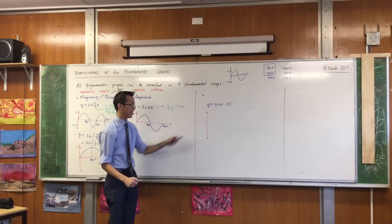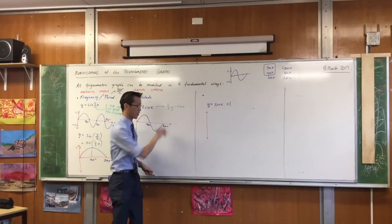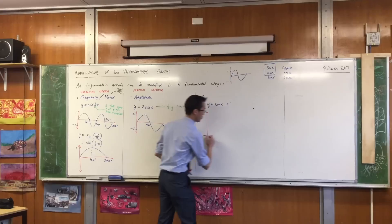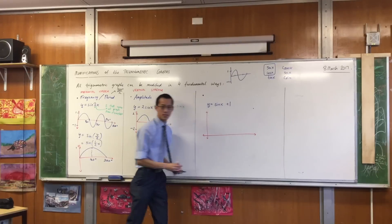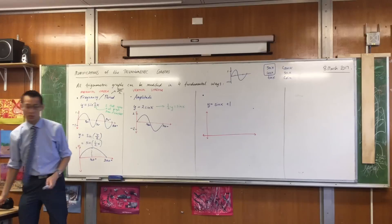The reason why I pointed that out first is so that I can draw my axes properly. I'm not going to draw it right through the middle, I'm actually going to draw it like this. Because my new range is zero to two.